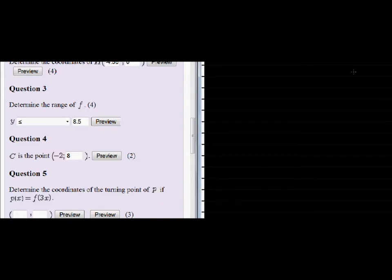Question 5. Determine the coordinates of the turning point of P if P is equal to F and instead of X we are giving each value a coordinate of, or each X is replaced with 3X.